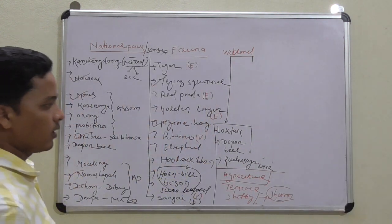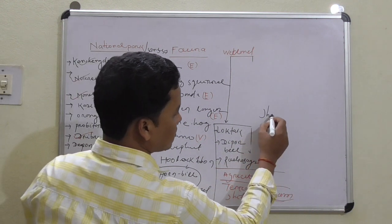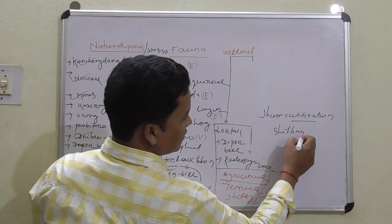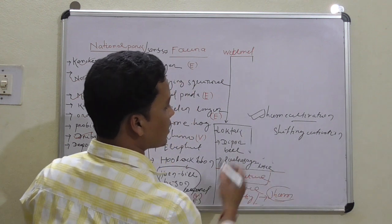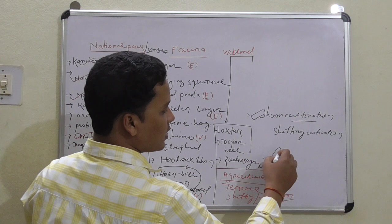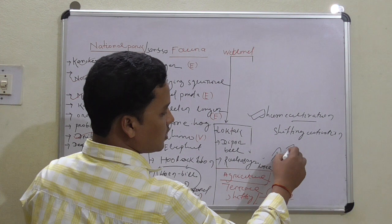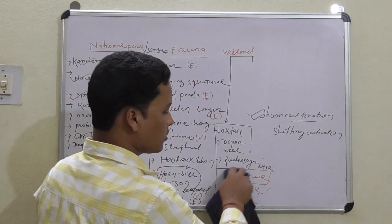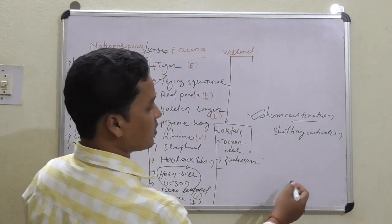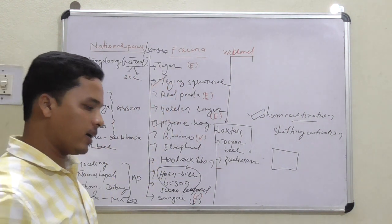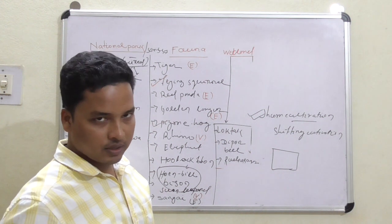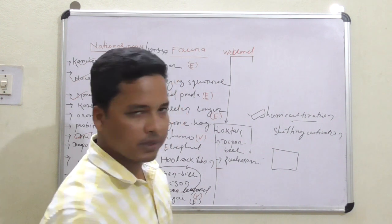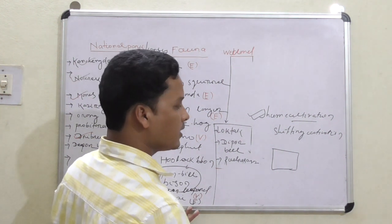Now, what is Jhum cultivation or shifting cultivation? Suppose a region is having forest. They will clear the forest to get new agricultural land. They will either set fire to the forest or slash it. This is the way they obtain new land for agriculture. This is known as shifting cultivation or Jhum cultivation in the Northeast region of India.